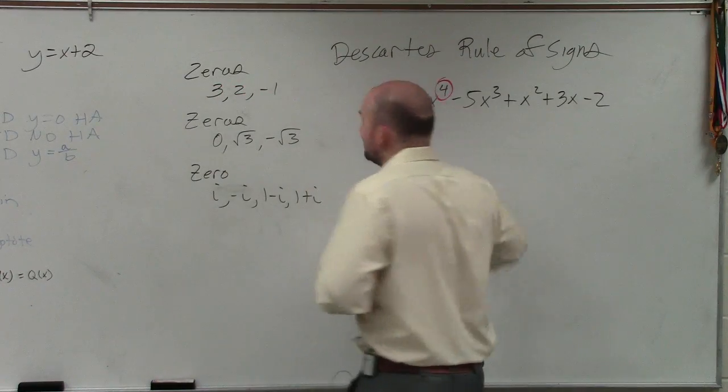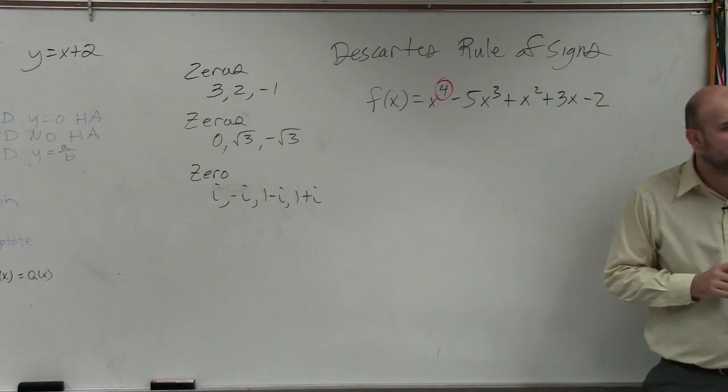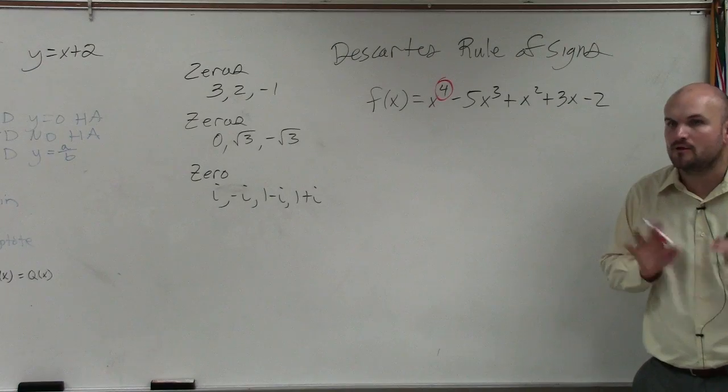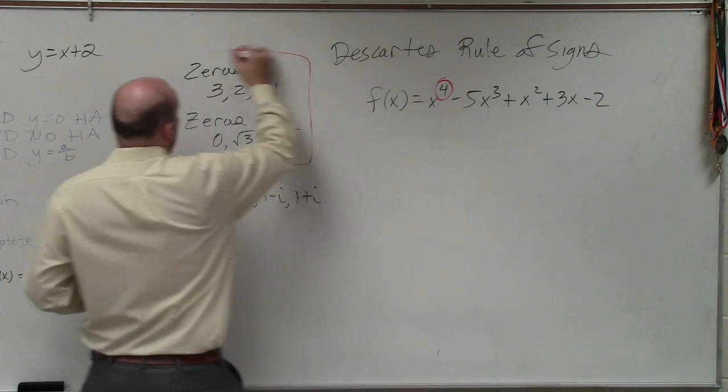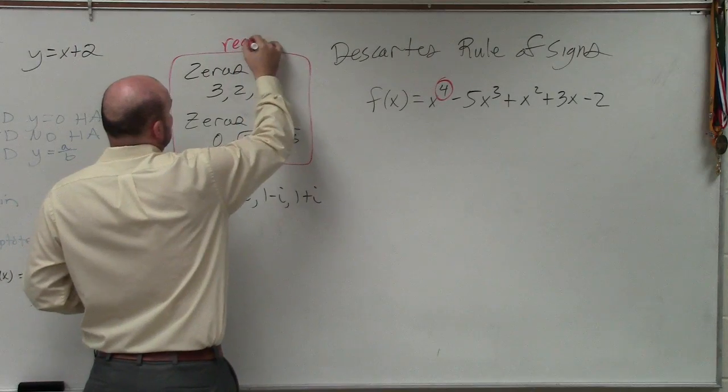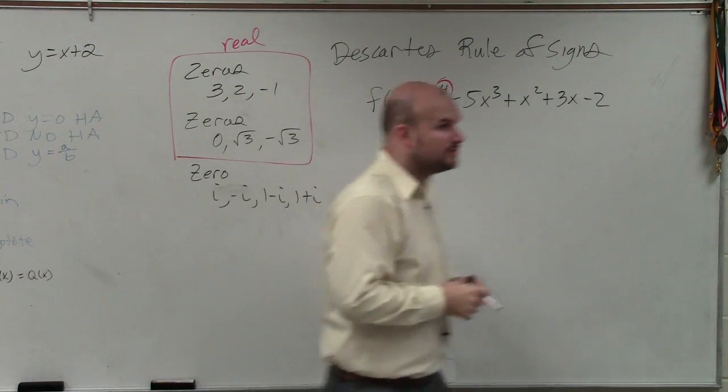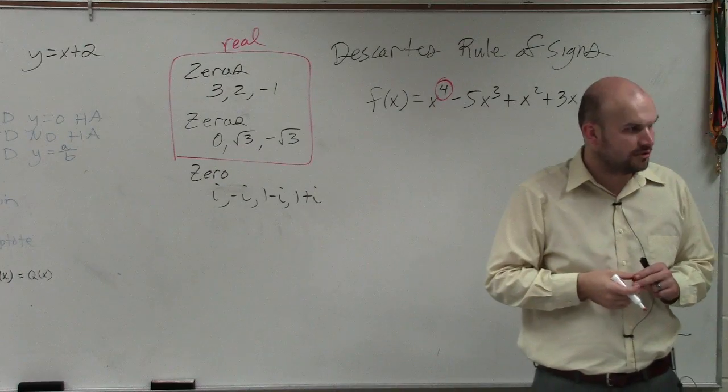First of all, based on the degree, we know how many zeros does this function have? Four. Four, OK. Now, these are all real. Those are real numbers. You can plot those numbers on a number line, correct?